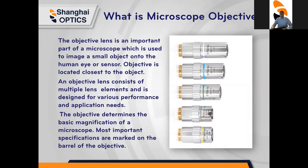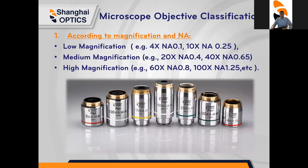You can also find specifications of a lens on the barrel of the objective, which can tell you what different classifications they fall under. According to magnification and NA, an objective lens can be classified according to magnification and numerical aperture. These objectives can have low, medium, and high magnification.